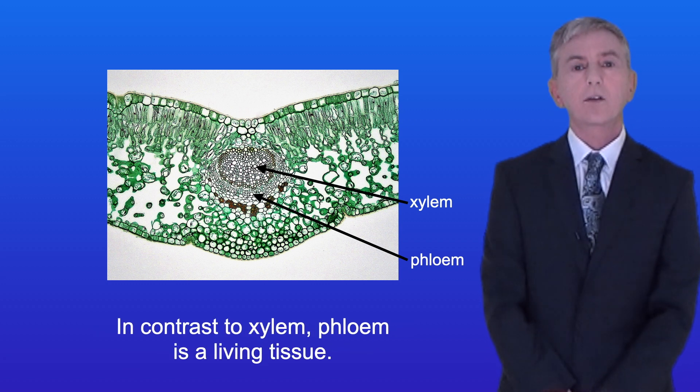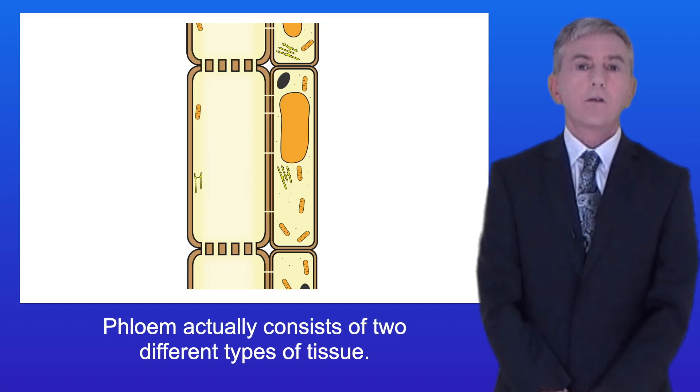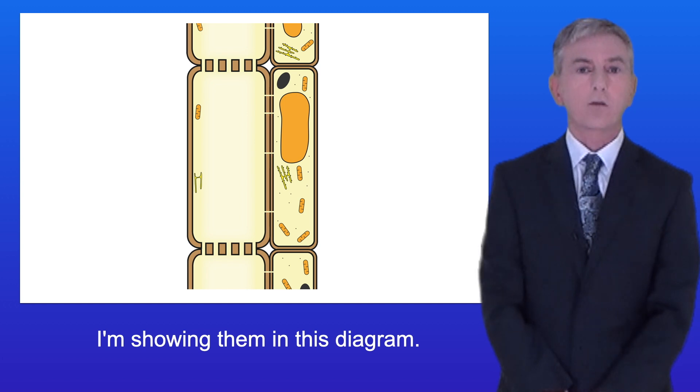In contrast to xylem, phloem is a living tissue. Phloem actually consists of two different types of tissue and I'm showing them in this diagram.